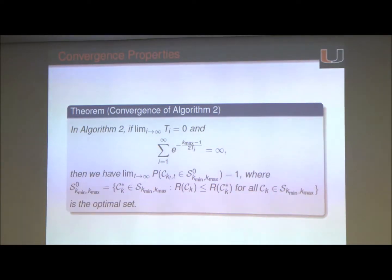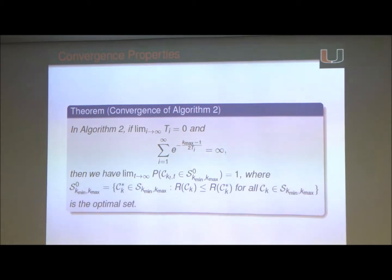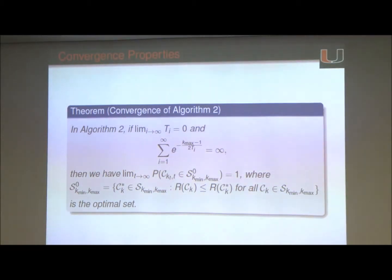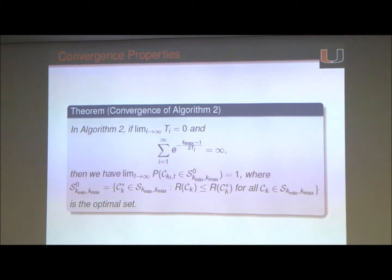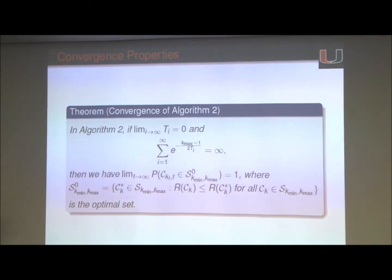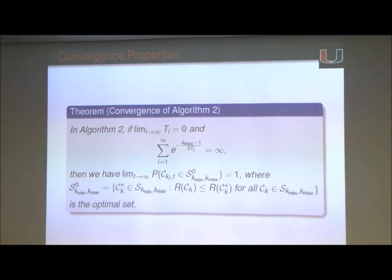Now we have two algorithms: one for finding dense subgraphs with a fixed size k, and another for finding dense subgraphs with sizes within a given range. Before jumping right into real-world data, we always want to test the algorithm's performance on something where we know the truth. If the algorithm can identify the truth, it works; if it doesn't, it doesn't make sense to try it on a real-world dataset.